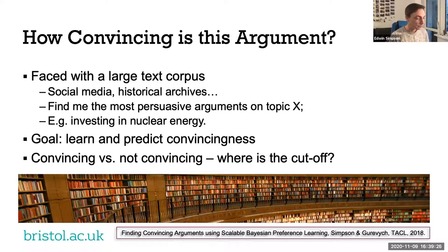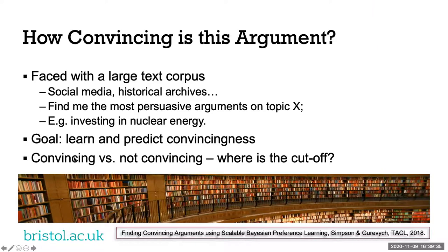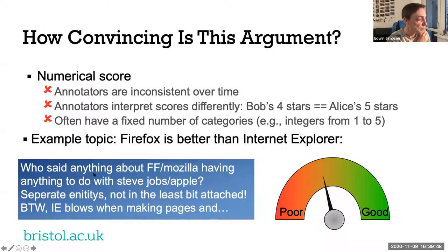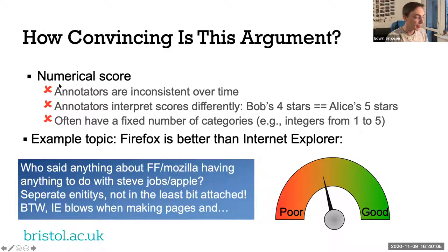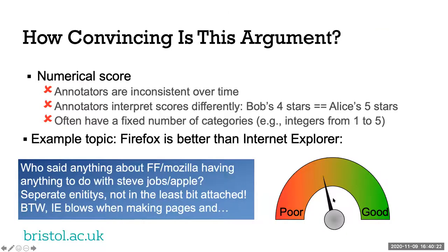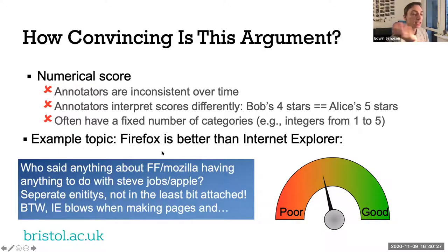This is clearly an ambiguous task because there are no two clear categories — no cutoff between convincing and not convincing. One approach is to ask annotators to provide a numerical score using a dial between 'poor' and 'good'. But it's quite difficult to choose a specific value. Annotators are not very consistent over time, and different people interpret scores differently. Bob might give four stars and Alice might give five stars but mean the same thing — which is a problem for aggregation.